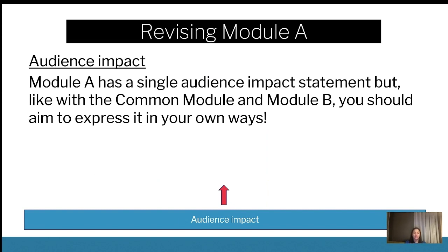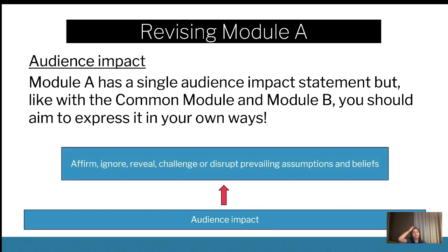Module A only has a single audience impact, but like common Module B, you can always express it in your own ways. The audience impact listed in the actual syllabus is: affirm, ignore, reveal, or challenge and disrupt prevailing assumptions and beliefs. So it can completely ignore those assumptions, or reveal them — like, 'did you realize this is how we're looking at this group of people?' — or affirm them and say those assumptions are actually correct.